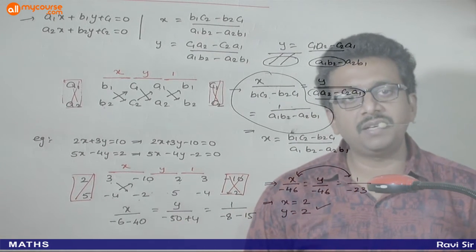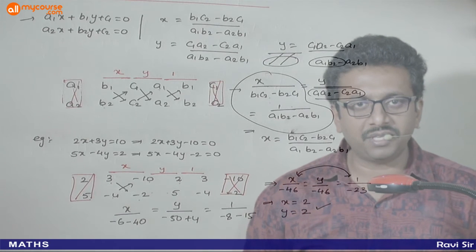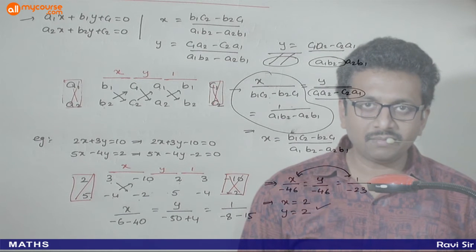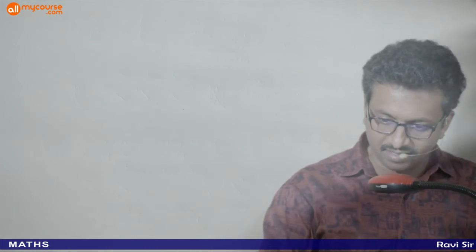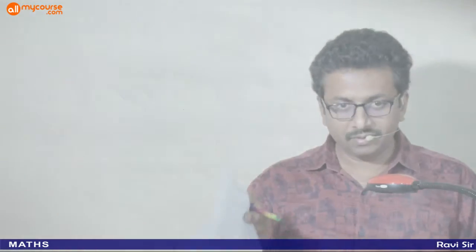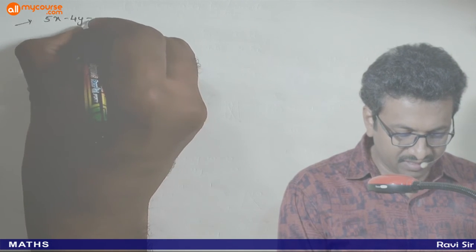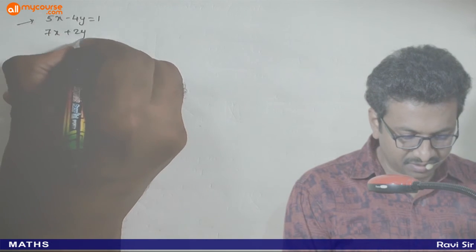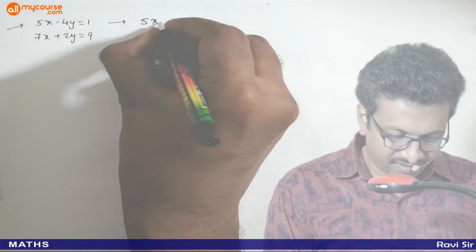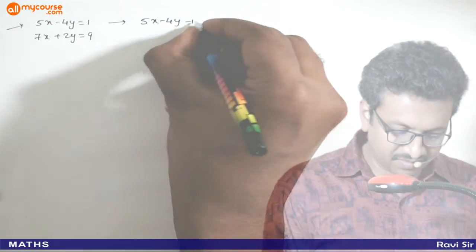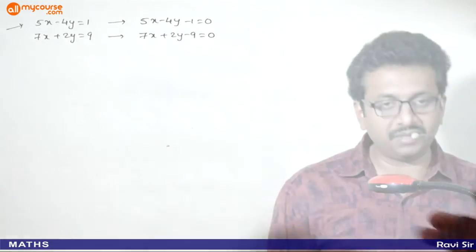So this method is called the cross multiplication method. Agar accha practice kiya toh aasaan ho jaayega, kuch confusion nahi hoga. Ek aur question karenge. The second question we will solve by cross multiplication method: 5x - 4y = 1 and 7x + 2y = 9. First step: convert to standard form — 5x - 4y - 1 = 0 and 7x + 2y - 9 = 0.